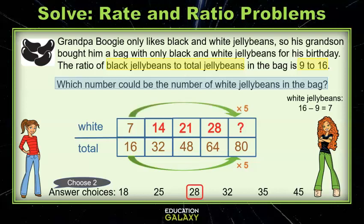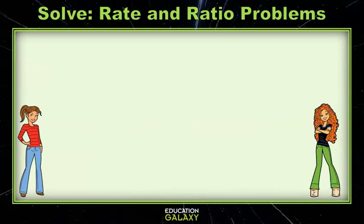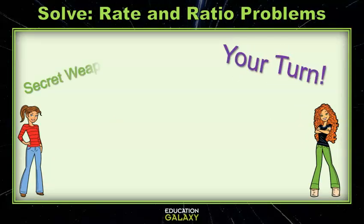Now I'm multiplying by 5. There will be 35 white jelly beans out of a total of 80. That's our second correct answer choice. Whew! I'm glad we're done. Okay guys, it's your turn. Remember to use the secret weapon.